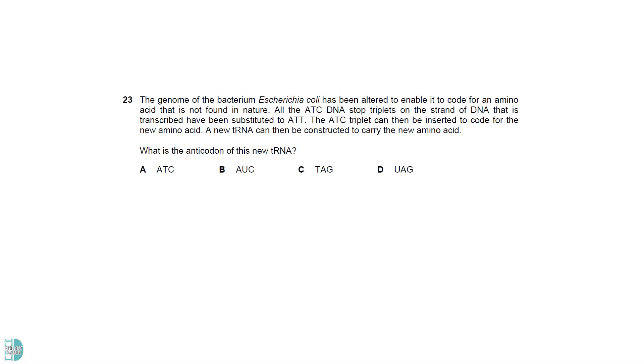The question says that ATC codes for the new amino acid. So, the new tRNA should correspond to ATC. ATC triplet transcribed into UAG in mRNA codon. tRNA anticodon that is complementary to the codon would be AUC.